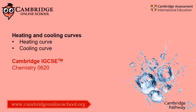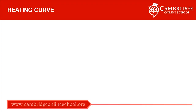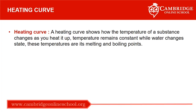Today's topic is heating curves and cooling curves. A heating curve shows how the temperature of a substance changes as you heat it up. Temperature remains constant while water changes state — these temperatures are its melting and boiling points.